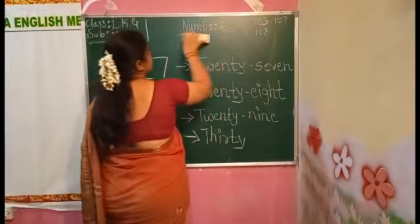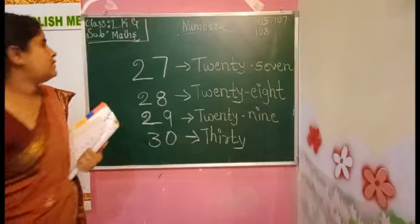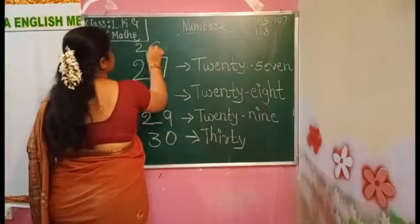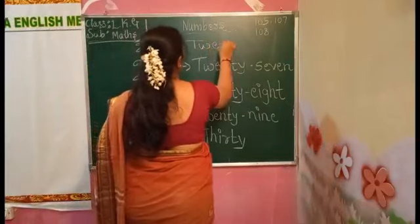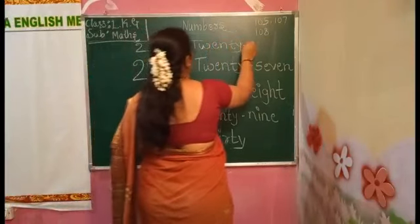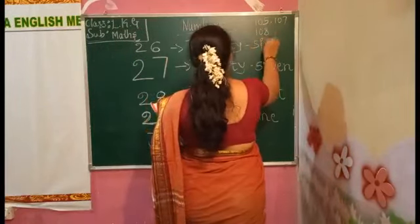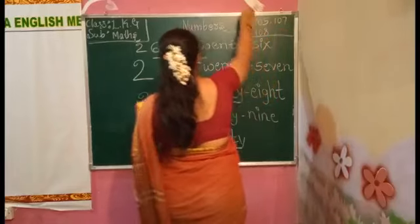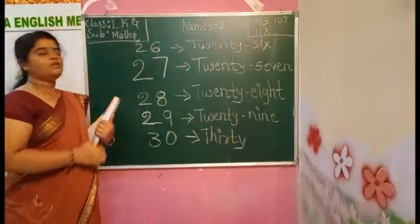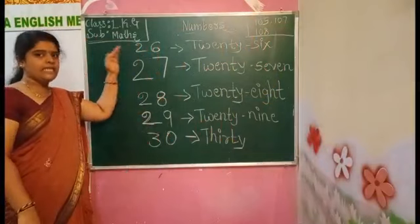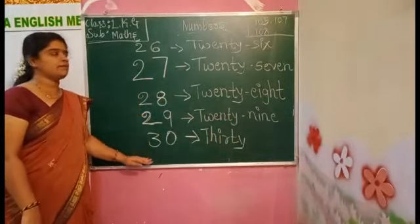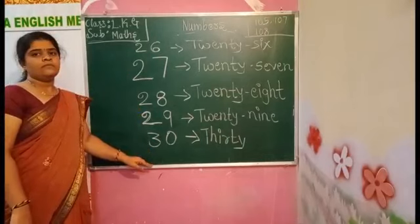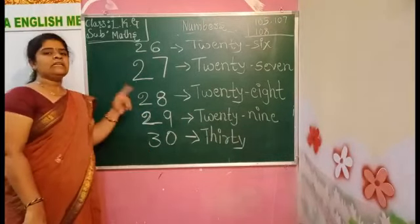Here I am writing number 26 — 2, 6, 26. T-W-E-N-T-Y-S-I-X. 26. Today we learned 26, 27, 28, 29, 30 numbers — numbers and number names.